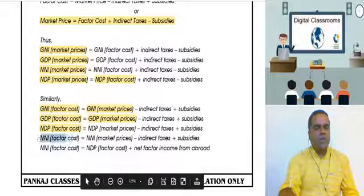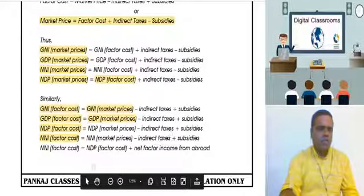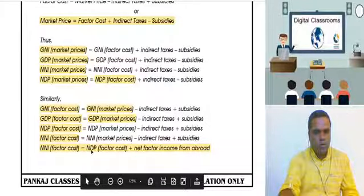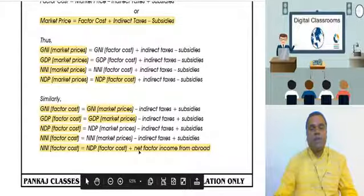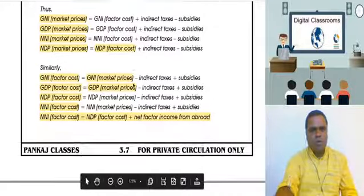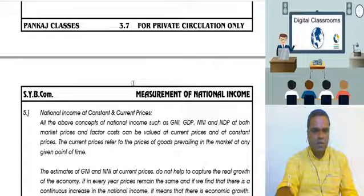NNI at Factor Cost equals NNI at Market Price minus Indirect Taxes plus Subsidies. To convert domestic to national, add Net Factor Income from Abroad, which is receipts minus payments. These formulas may be asked for objective or brief answer purposes.